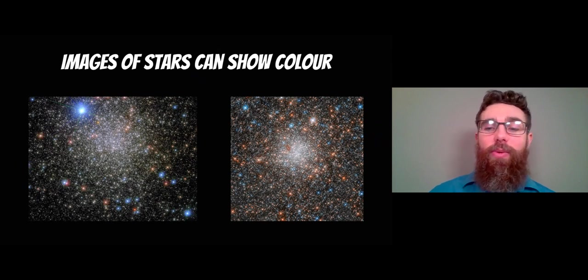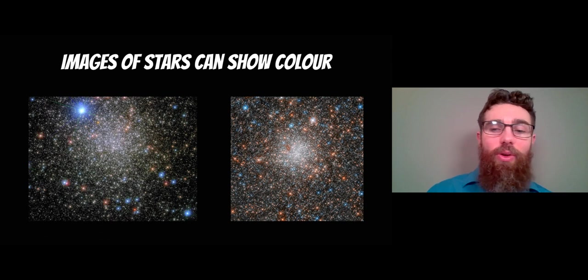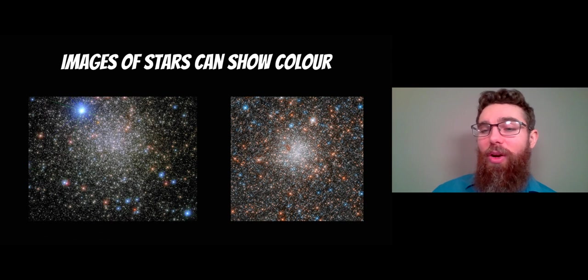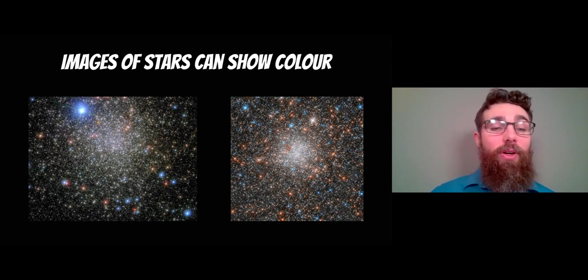Looking at these images of star clusters, you can see there's a whole range of different colored stars. Just by looking, I can tell you that the bluer stars are going to be hotter than the white and red stars. But I can't tell you an exact number just by looking, so we need to figure out a way of getting an absolute temperature.